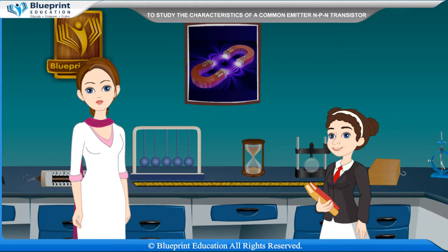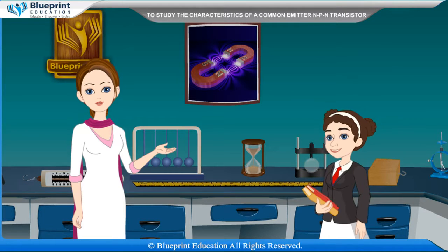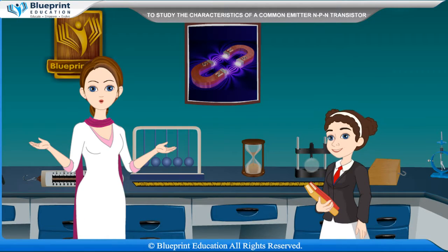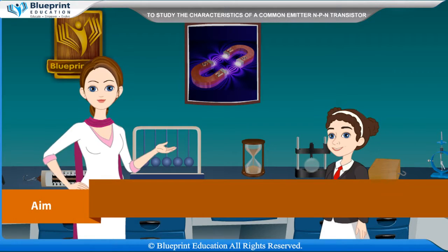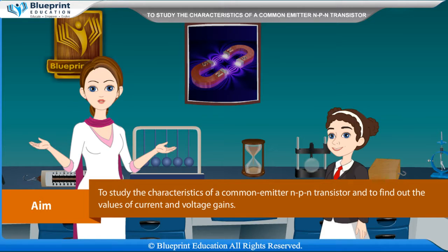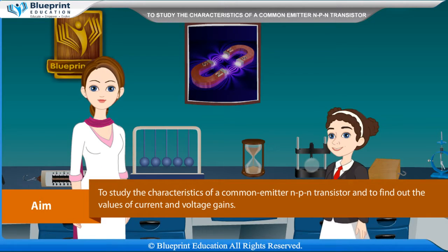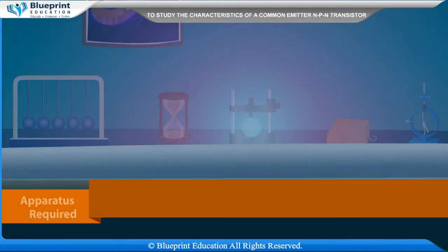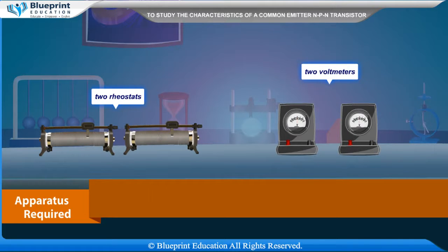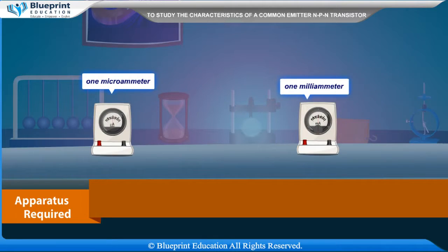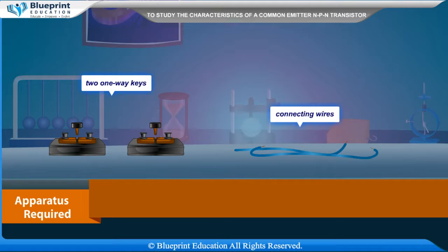Let's do an experiment to study the characteristics of a common emitter NPN transistor and find out the values of current and voltage gains. Apparatus required: NPN transistor, 2 batteries, 2 rheostats, 2 voltmeters, 1 microammeter, 1 milliammeter, 2 one-way keys, and connecting wires.